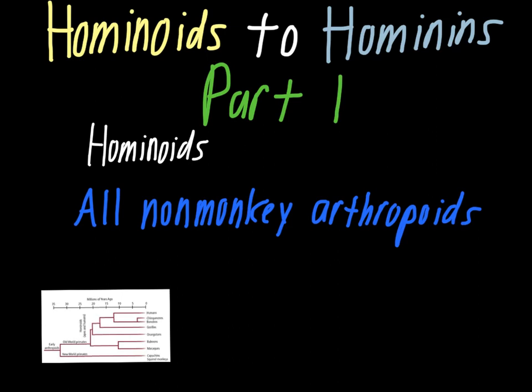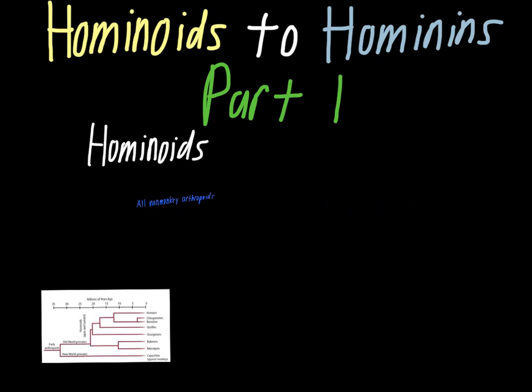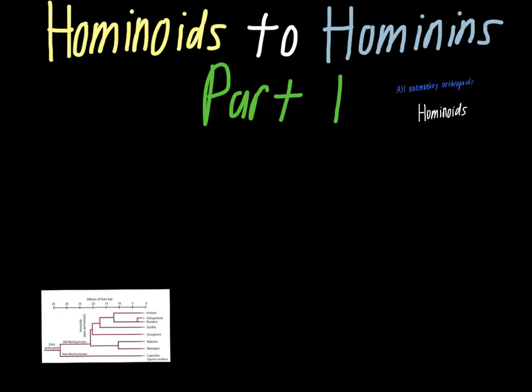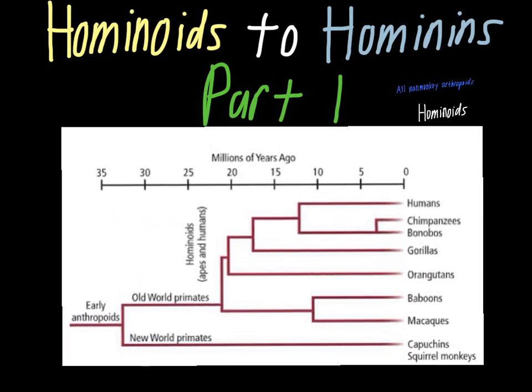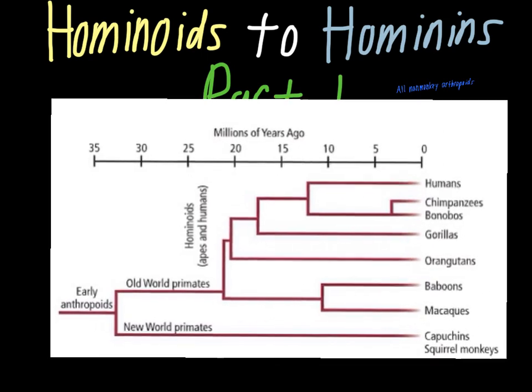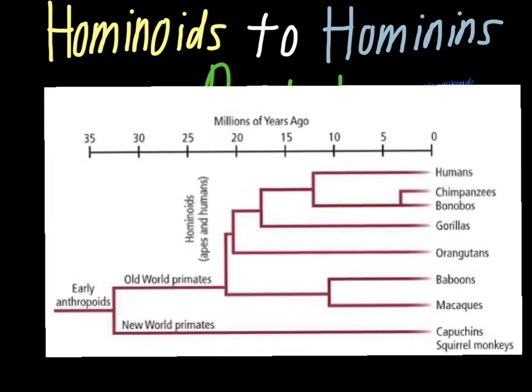Monkeys have a very long tail, whereas apes and modern hominins like people do not have a tail. So hominoids are basically these earlier groups of primates that are a little bit less complex than some of the apes and modern versions that we're used to thinking about.